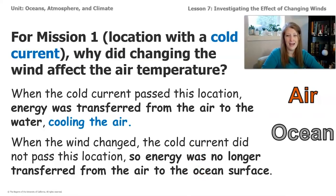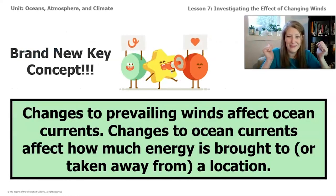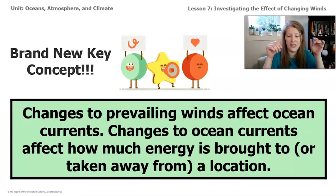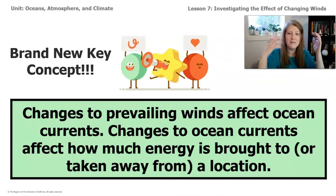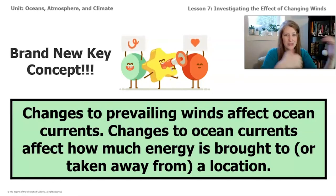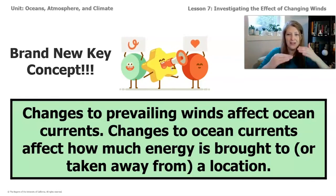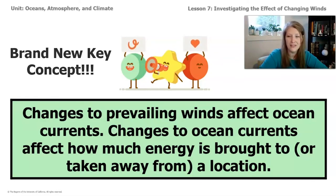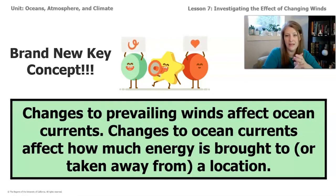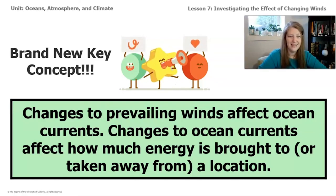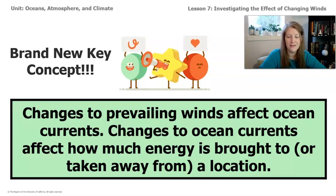We have a brand new key concept, which is so exciting. From our sim missions, we learned that the air temperature of a location can change when the prevailing winds change, because the change to prevailing winds actually causes the ocean currents to change. Ocean currents affect how much energy is transferred between the air and the surface. Our key concept is: changes to prevailing winds affect ocean currents, and changes to ocean currents affect how much energy is brought to or taken away from a location.